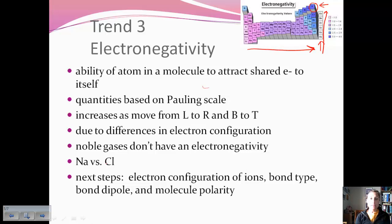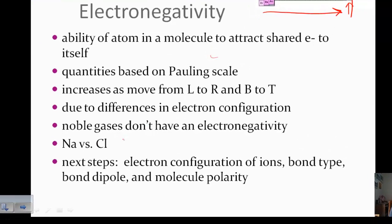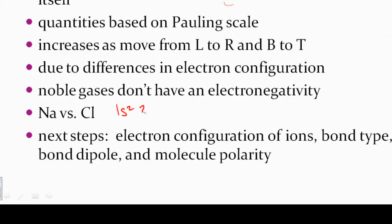For example, sodium versus chlorine. So if I do sodium's electron configuration, it is 1s2, 2s2, 2p6, 3s1. Well, if I look at its valence electron, it only has one valence electron. Remember, those electrons in the highest energy level. Well, that's not very stable.